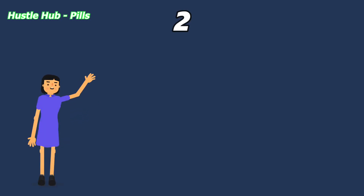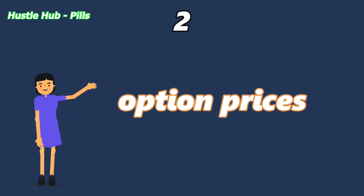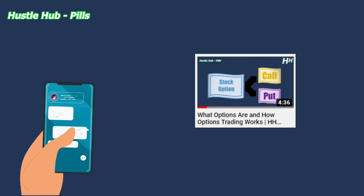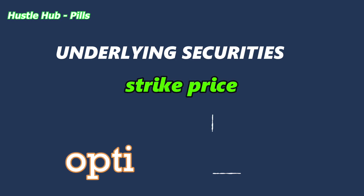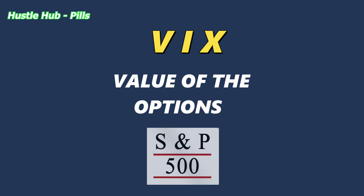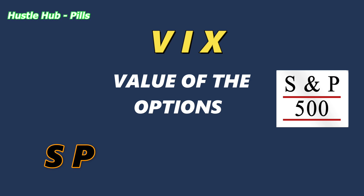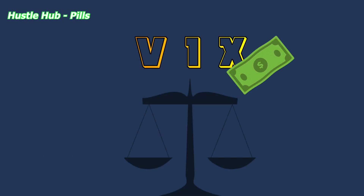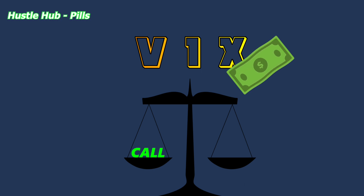The second way to gather data about volatility is to look at options prices. If you don't know how options work, you should watch our video about this topic. If there is a higher chance that the underlying securities reach the strike price, the options will steadily rise in value. The VIX valuation is derived by the value of the options on the Standard & Poor's 500, called SPX, that expire within 23 and 37 days. The VIX value is derived by the weighted prices of these options, both calls and puts.